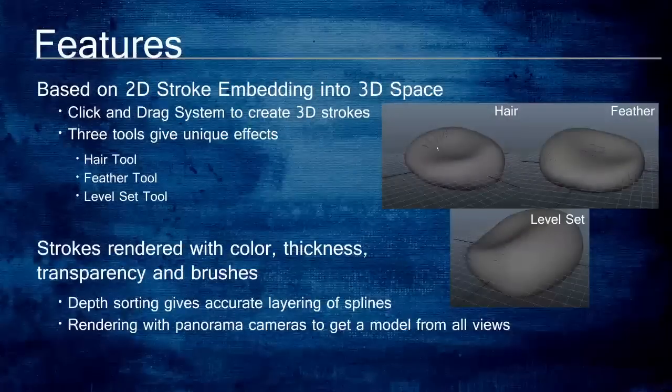One of the main features of Overcoat is the ability to embed a 2D stroke into 3D space. This is accomplished through a click-and-drag interface in the 3D camera view. As the artist draws, a dotted line appears to show where the stroke is being created. The artist is able to use three different tools to create their strokes: the hair, feather, and level set tools. Each one creates a different type of stroke in 3D space. Another main feature of Overcoat is the ability to render 3D strokes back into 2D images.